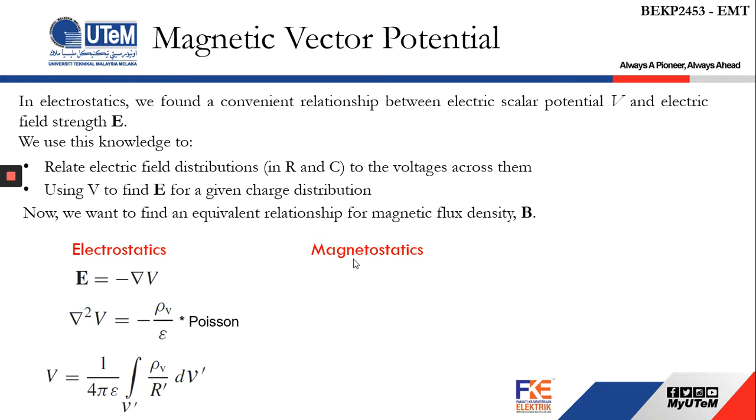The thing I want to highlight is the equation. First is this equation. When we talk about magnetic vector potential, since we cannot have a magnetic scalar potential because it always has a direction, that's why we have to represent it as a magnetic vector potential.